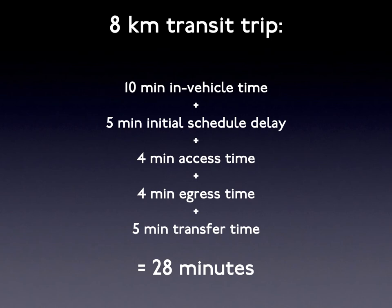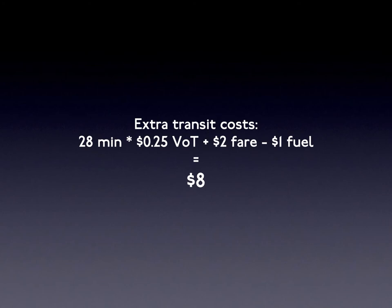At a value of time of $15 per hour (25 cents per minute), this is the equivalent of $7. The transit fare is $2, and the cost of gas at $5 per gallon ($1.25 per liter) at 25 miles per gallon (10 kilometers per liter) is $1 — not even considering carpooling. Net additional out-of-pocket cost for transit is now the equivalent of $8. Of course, vehicle ownership at $10 to $20 per day can be avoided, as can parking charges. Also, we are not considering externalities.